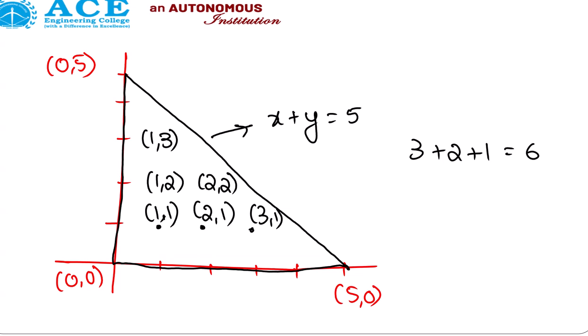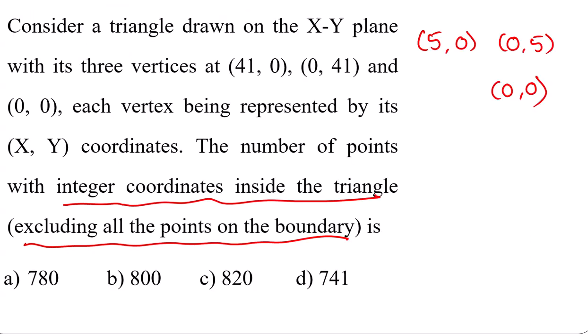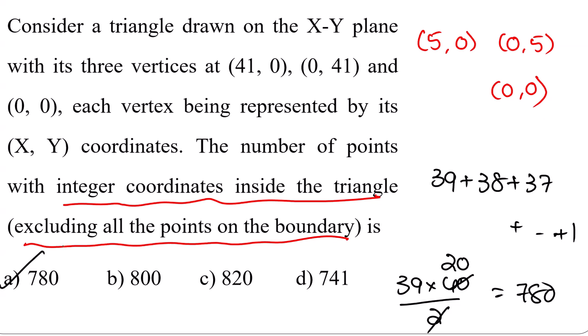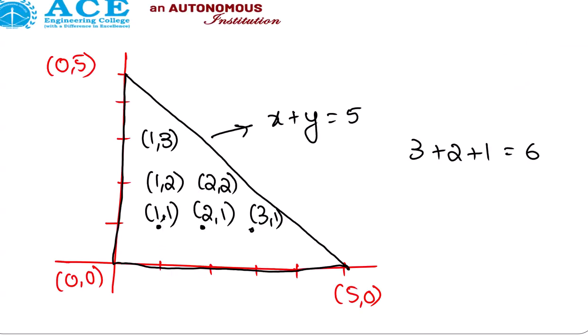But see, you have row axis 0 to 5 but we counted only from 3 because on the boundary we should not take. When you do the same thing now for 0 to 41 on the row axis, we should count from 39 only. So 39, 38, 37, and so on up to 1. This is the sum of natural numbers from 1 to 39: n times n plus 1 divided by 2, which is 780.